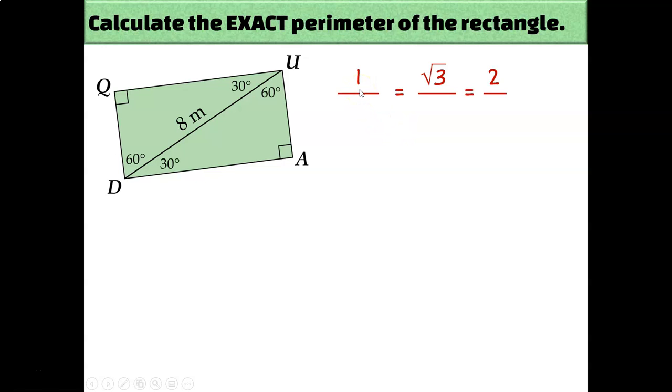1 is for the length of the short leg, which is either QD or UA, depending on which triangle you're looking at. Remember that the short leg is always the one that is across the triangle from the smaller angle, the 30 degree angle. The square root of 3 is for the long leg, which is either QU or DA, depending on which triangle you're looking at. The long leg is always across from the 60 degree angle. And 2 is for the hypotenuse, which is the only thing that we actually know the length of. The hypotenuse is always across from the right angle, so the hypotenuse here is 8.